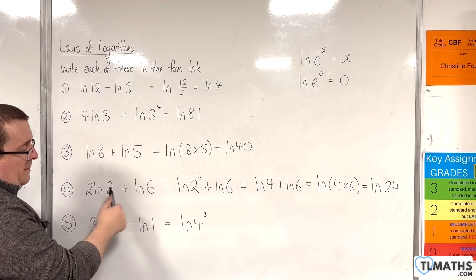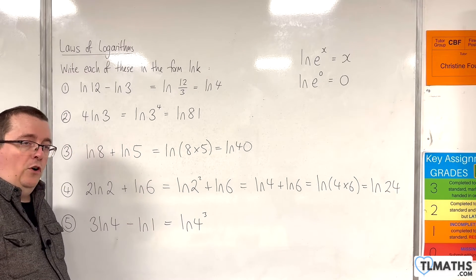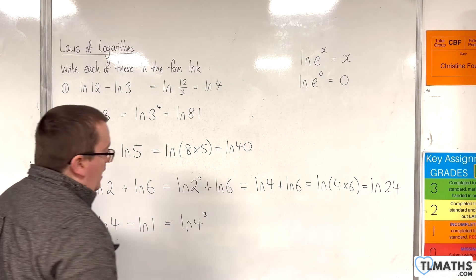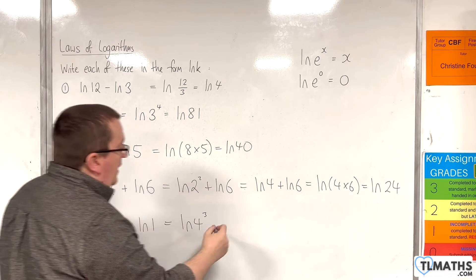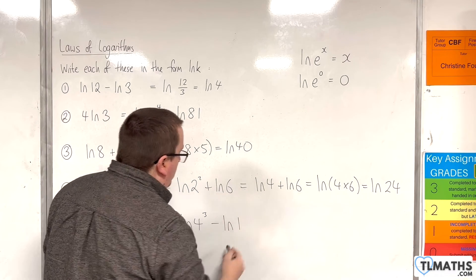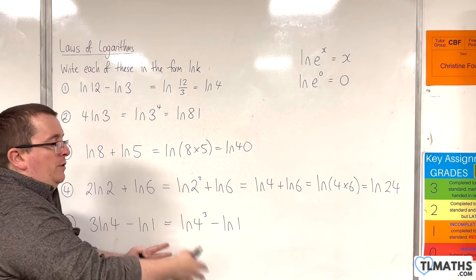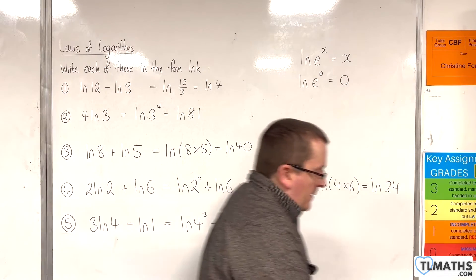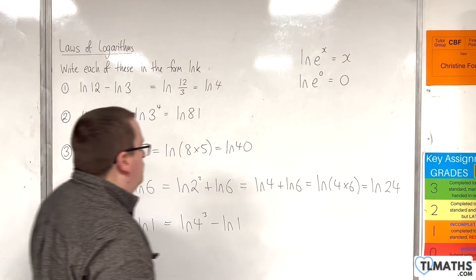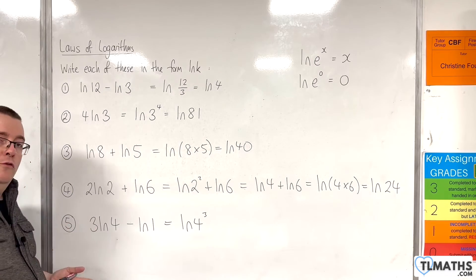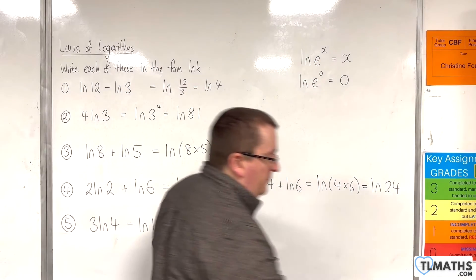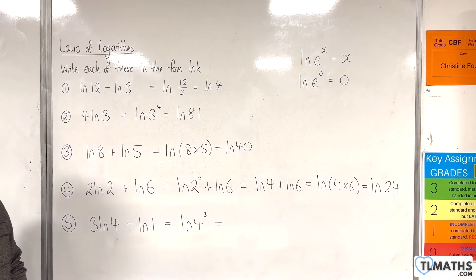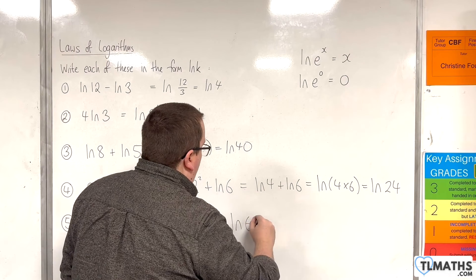So you can either think about that just cancelling it out, it's gone, it's 0. You could theoretically combine this and say I've got the natural log of 1, and then use the quotient rule to write that's the natural log of 4 cubed over 1. That would be precisely the same. But I wouldn't really write that myself, I would just say natural log of 1 is 0, so it's gone. So natural log of 4 cubed is the natural log of 64.